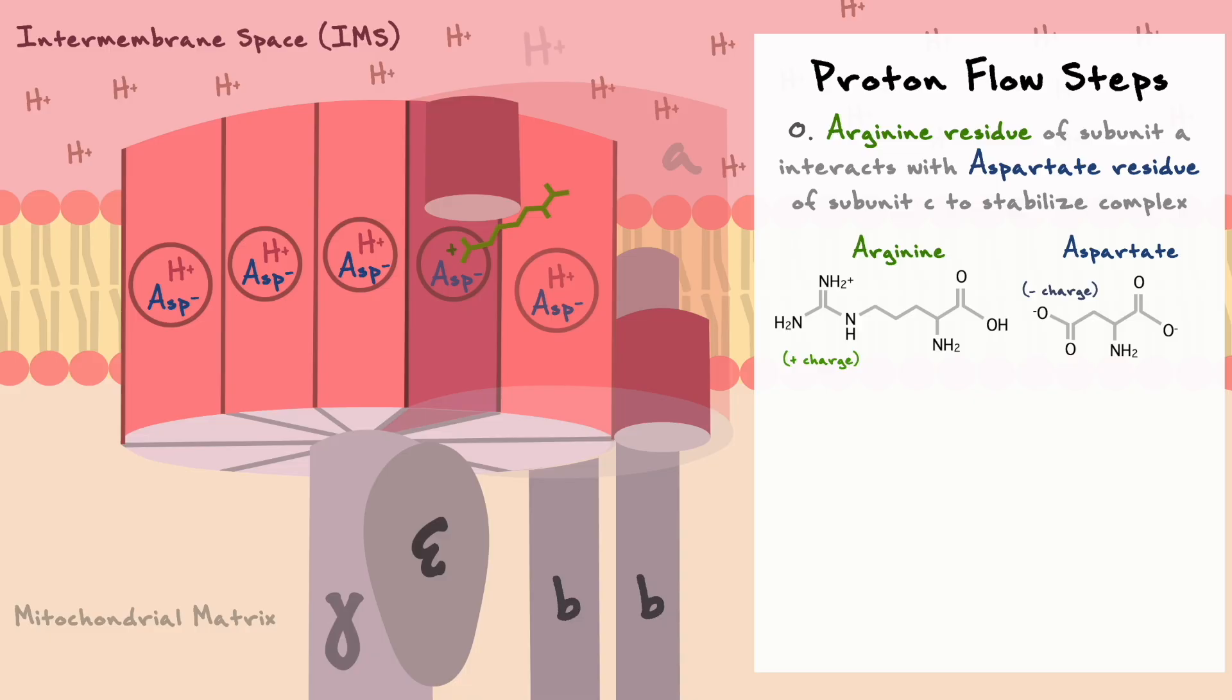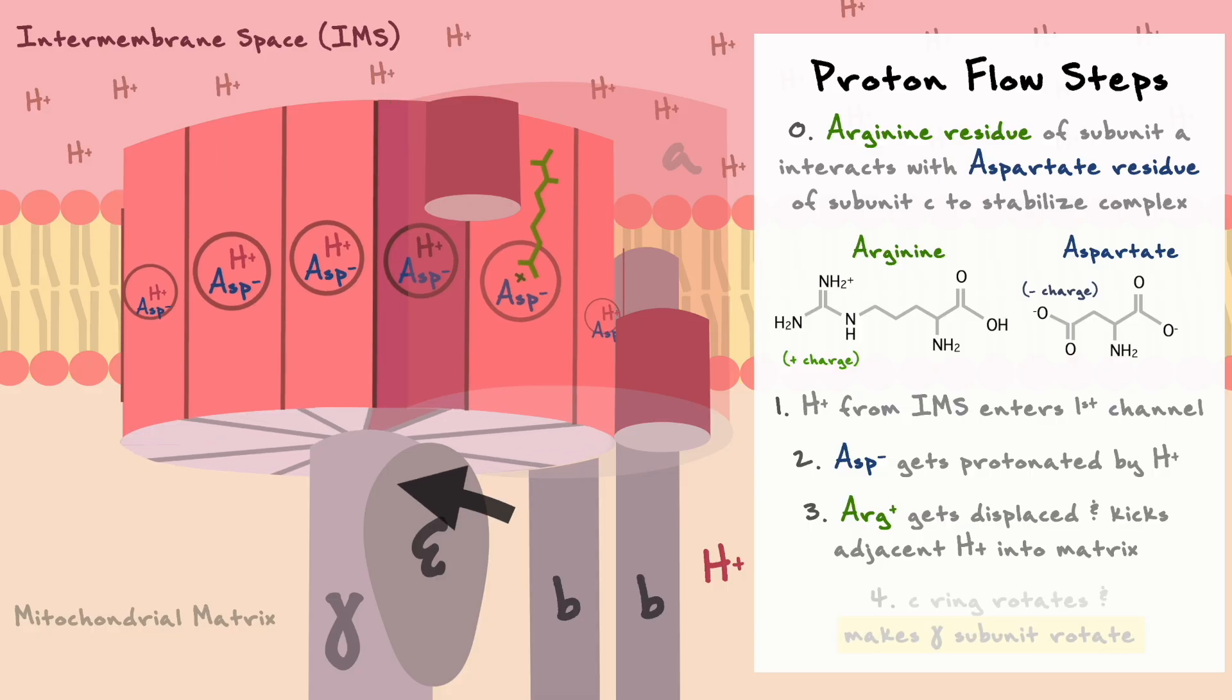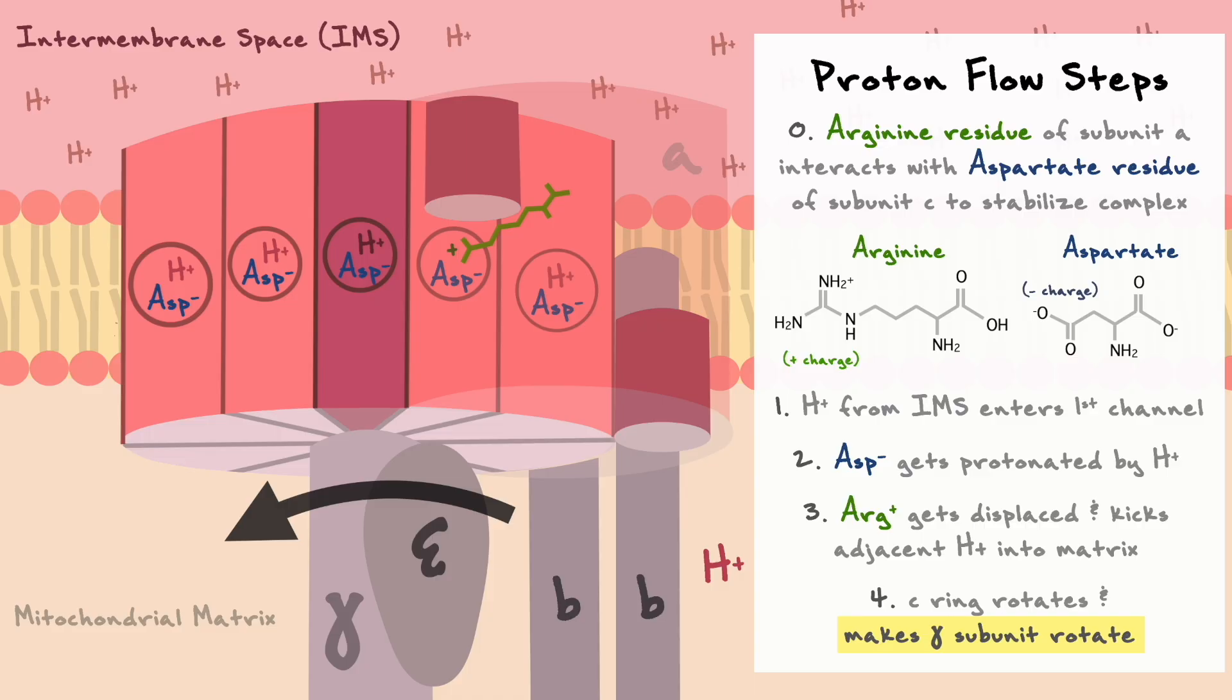Now let's consider the path of one proton that crosses the membrane. The first step of this proton will be to cross the first channel where it will meet the arginine and asparagine interaction. Given the negative charge of the aspartate, the proton will protonate this residue and effectively kick out the positive arginine. This arginine gets kicked out onto the next C subunit that has a proton and because of the electrostatic forces, the collision between the two kicks the proton out into the matrix. After this happens, the C ring rotates and consequently makes the gamma subunit rotate.